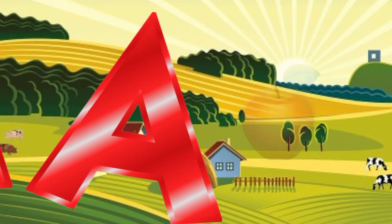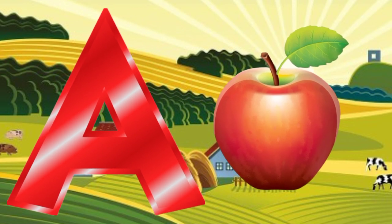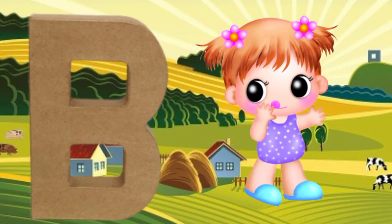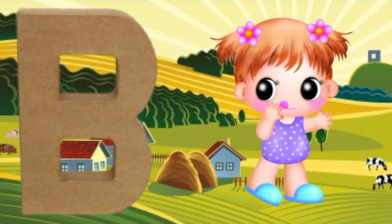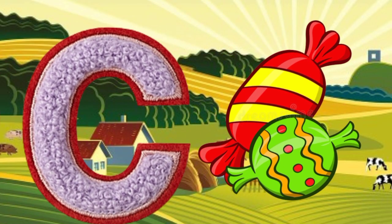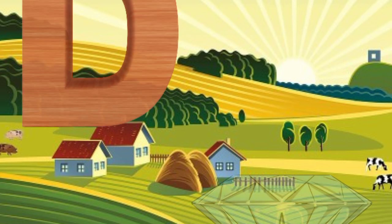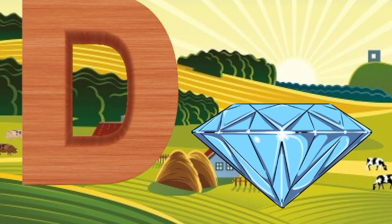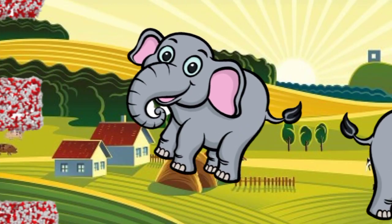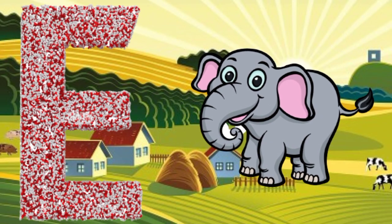A is for Apple, A-A-Apple, A-A-Apple, A-Apple. B is for Baby, B-B-Baby, B-B-Baby, B-Baby. C is for Candy, C-C-Candy, C-C-Candy, C-Candy. D is for Diamond, D-D-Diamond, D-D-Diamond, D-Diamond. E is for Elephant, E-E-Elephant, E-E-Elephant, E-Elephant.